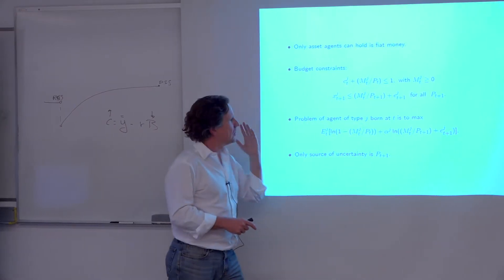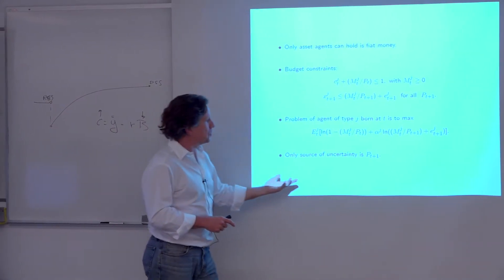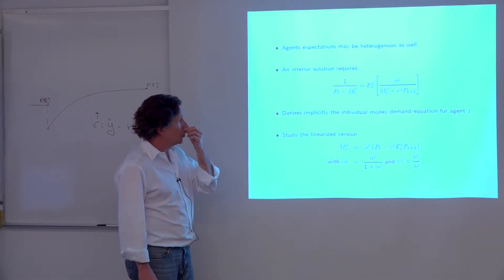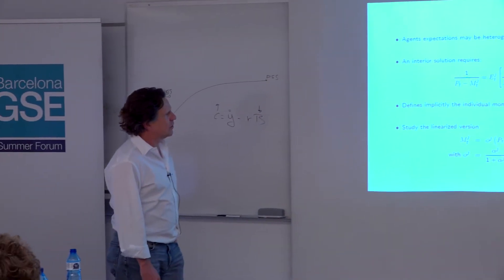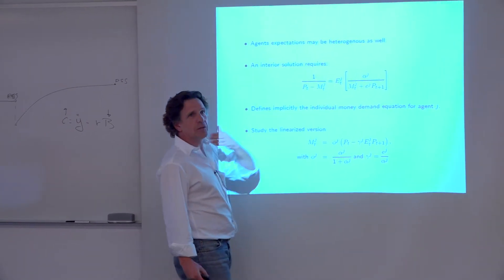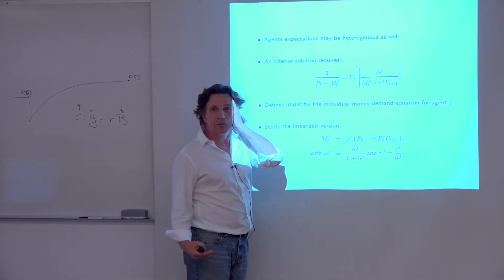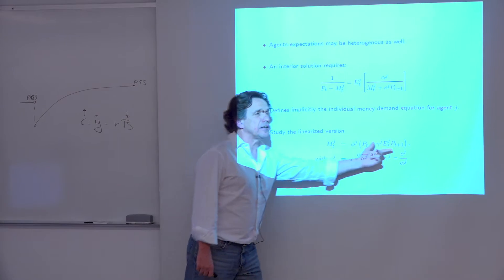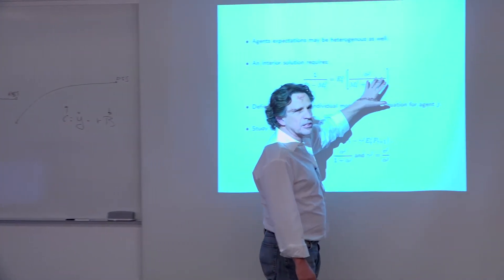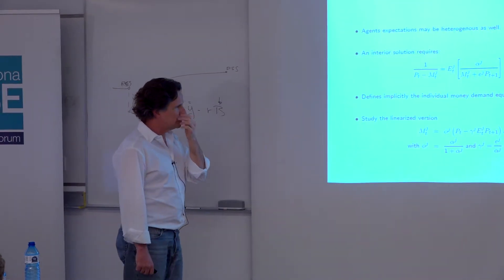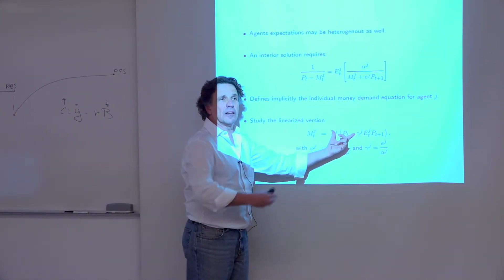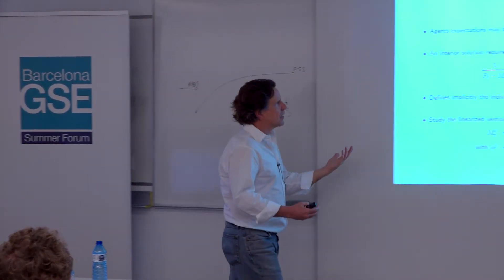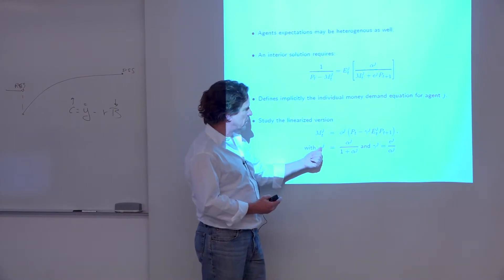You replace the budget constraints in the preferences. The only choice is M, and the only source of uncertainty is P_{t+1} for the agent. So you get first-order conditions with respect to M — this is log utility, giving you an expression where there are two agent-specific parameters: preferences and the second-period endowment, which define the individual money demand. This is nonlinear, so we linearize and get a linear money demand function. The OLG structure, the second-period endowment — all the things are designed to give us this linear demand function. An agent is defined by E and alpha, or equivalently by phi and gamma.